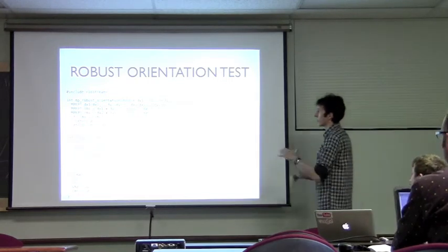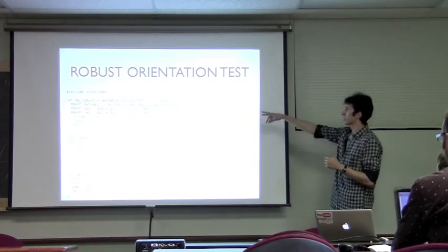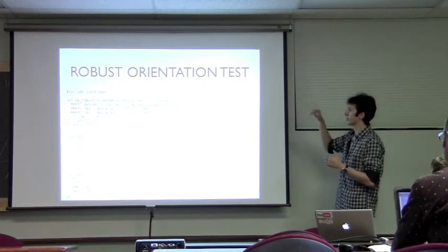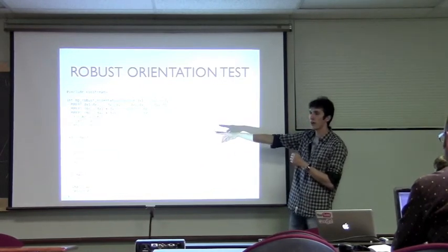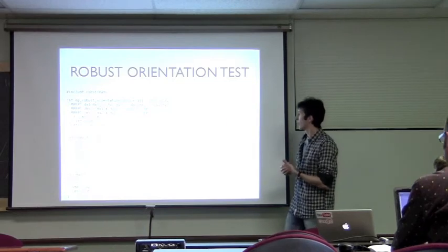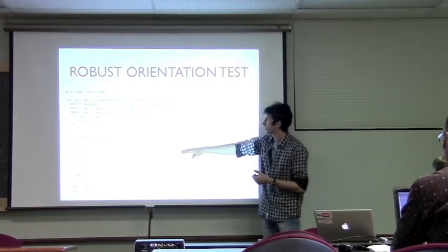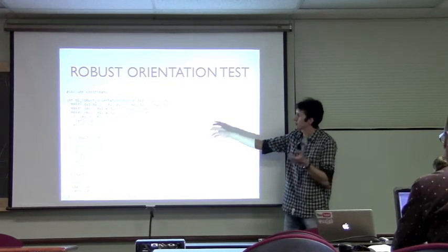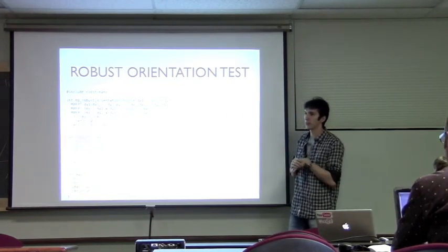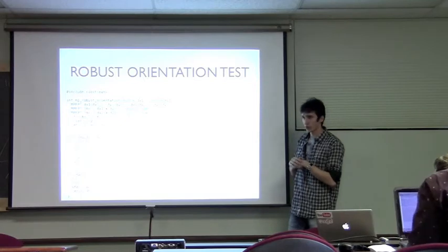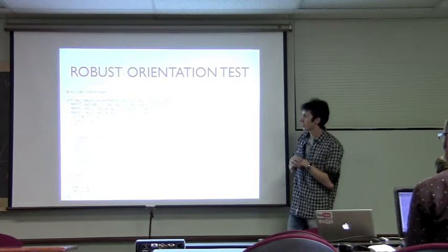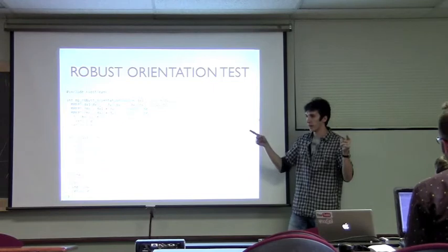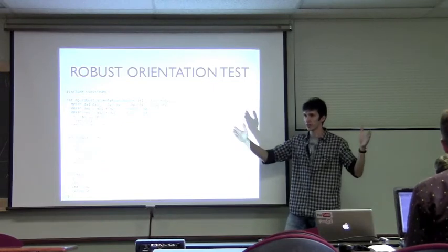We speed up the initial multi-precision implementation: instead of calling the multi-precision version directly, we call the robust FPT version. Here we create six robust FPT variables and compute them. Then we check if those values could be equal — we have the value and relative error as an interval. We check if the two intervals intersect.